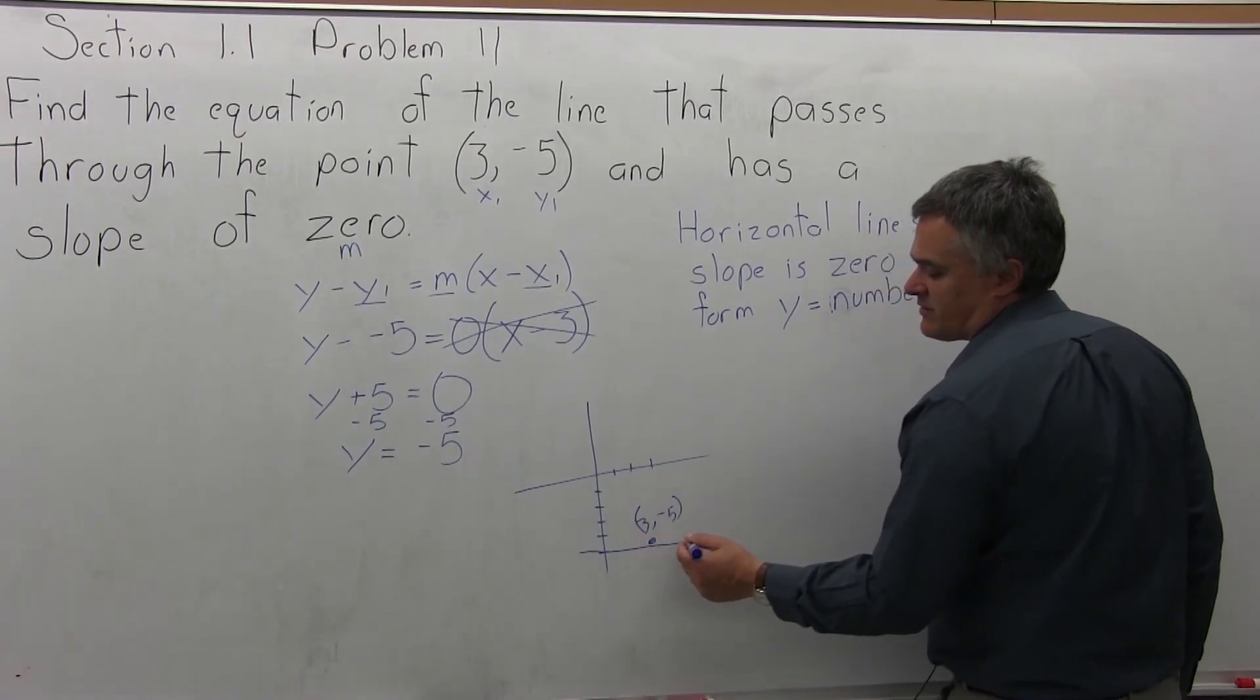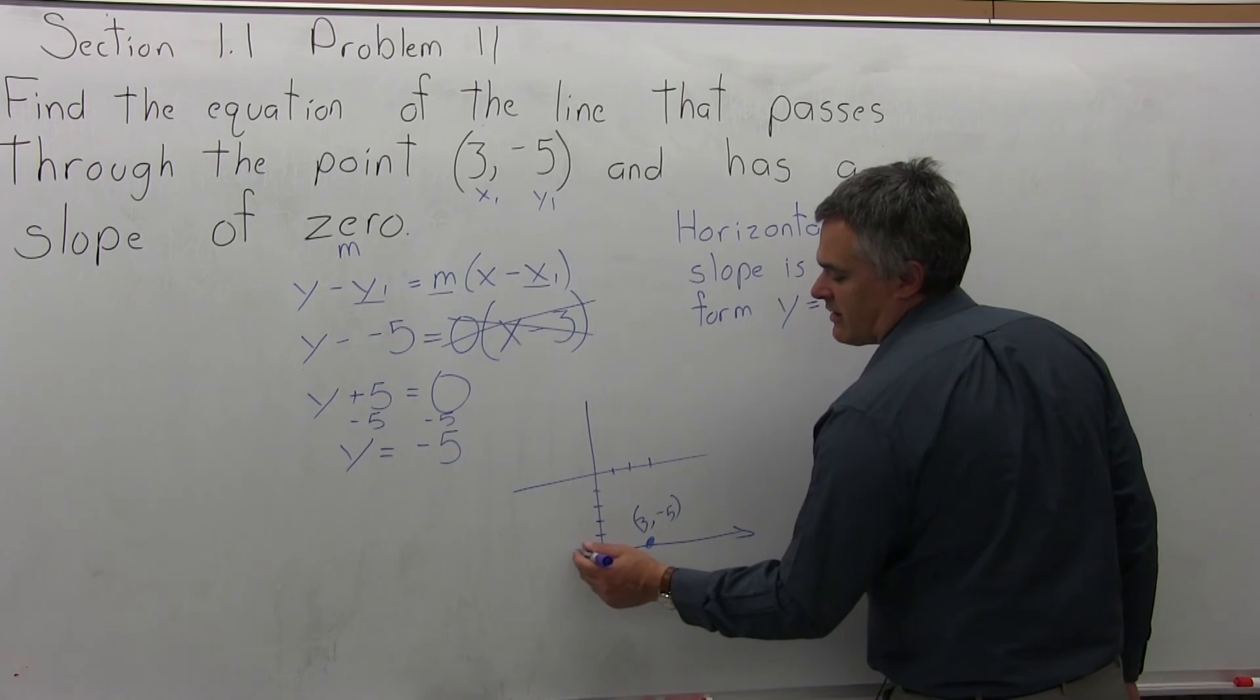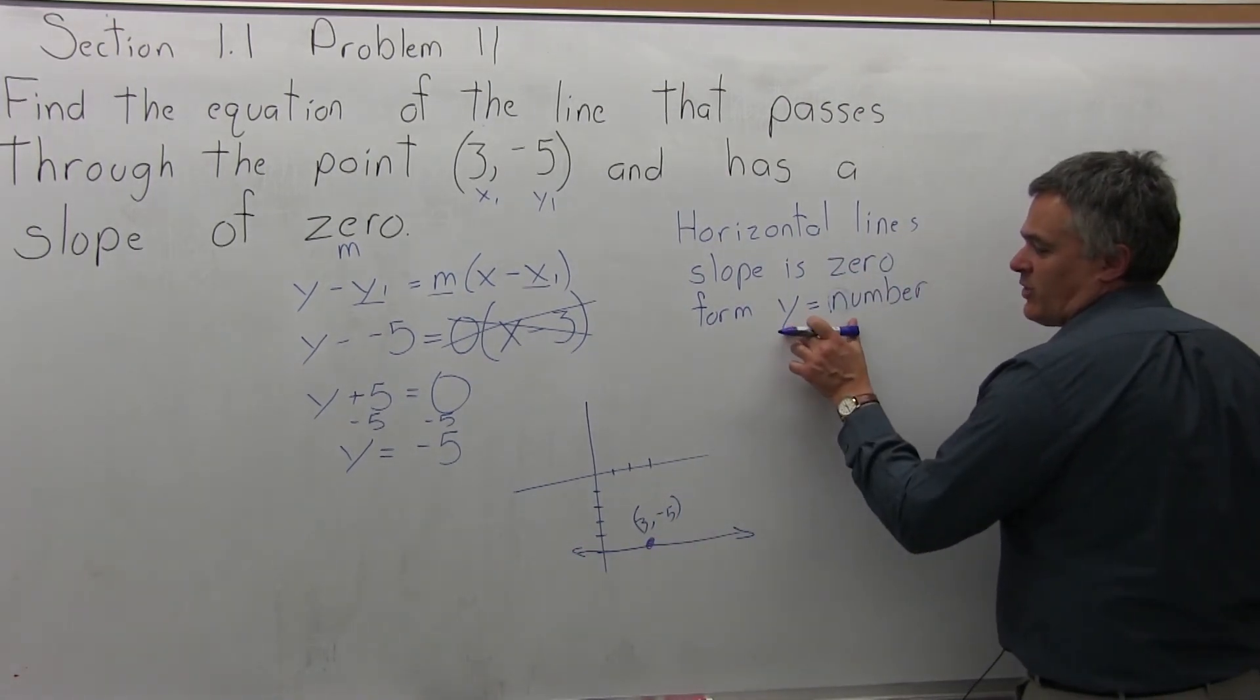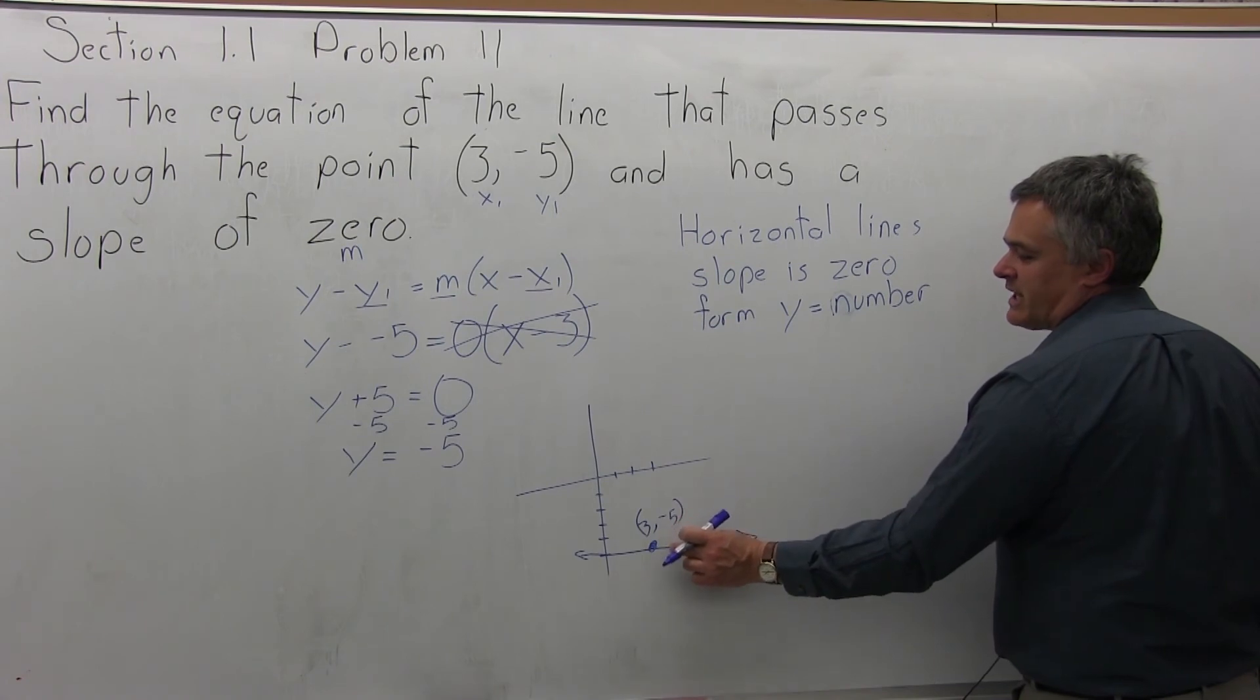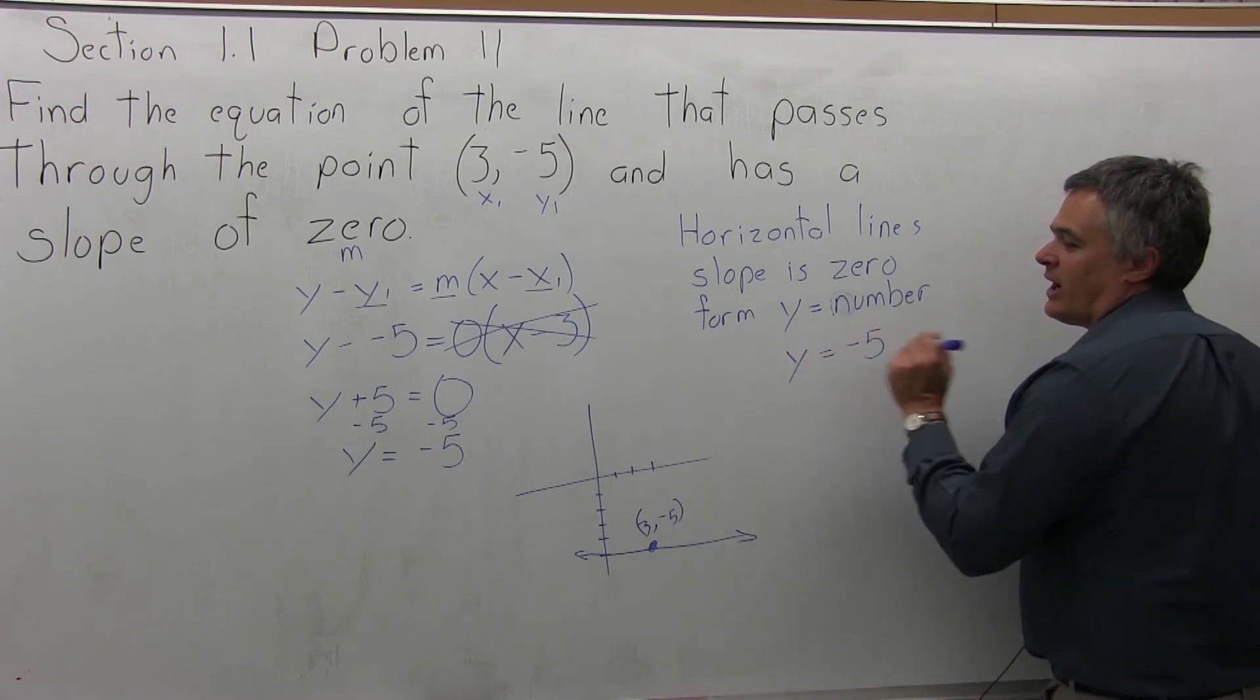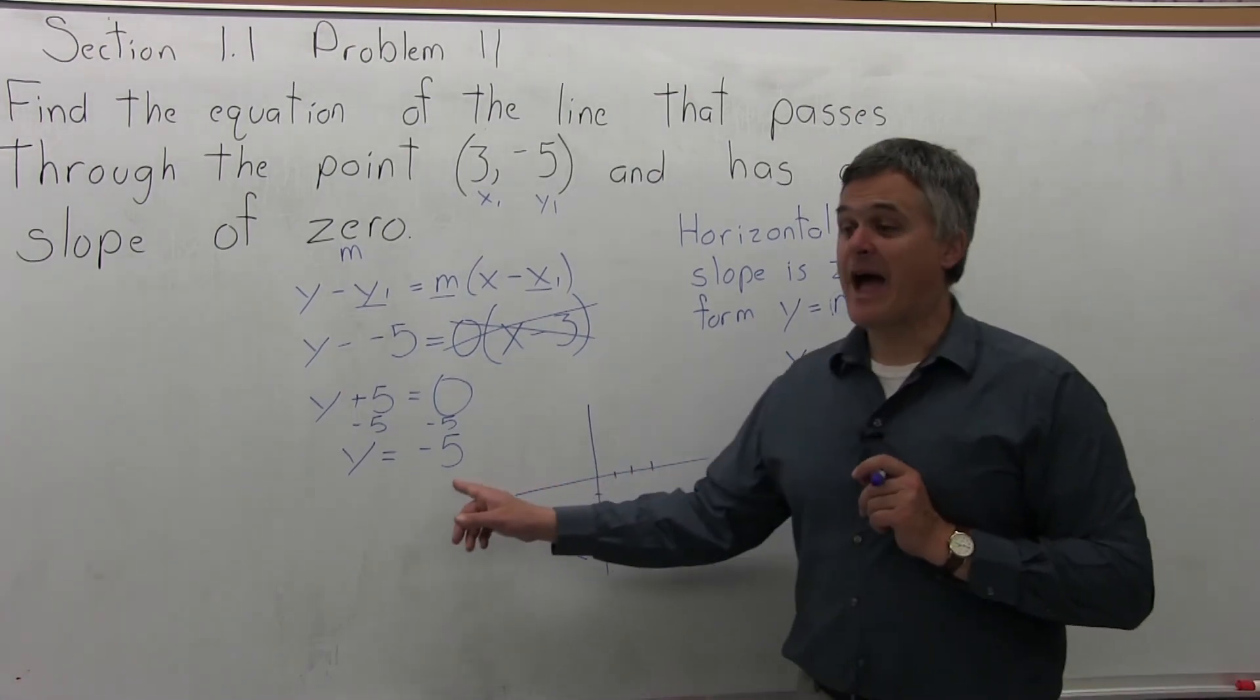And because it has a slope of 0, I know it's a horizontal line. And the form will be y equals a number, and the number is the height of the horizontal line. I could have gone right to y equals negative 5, with much less math.